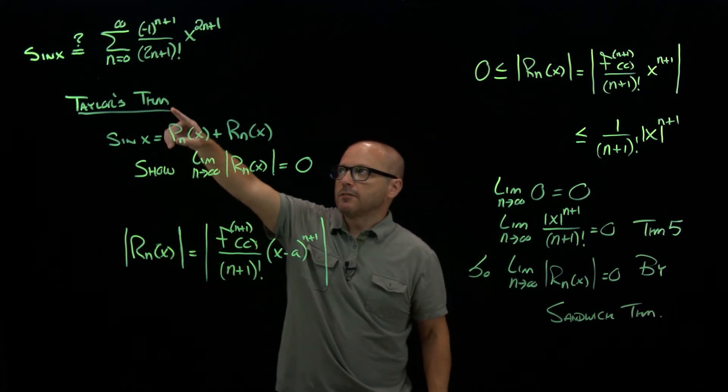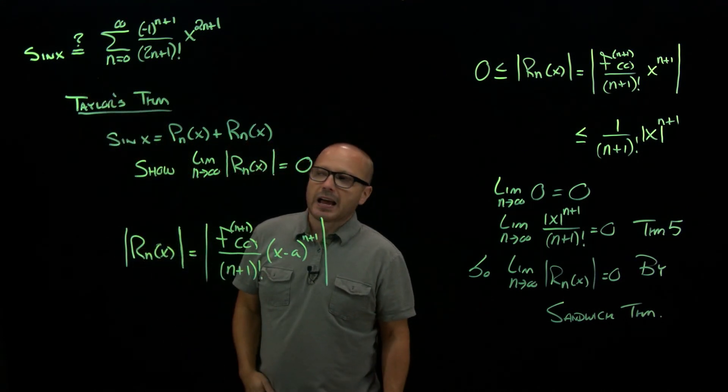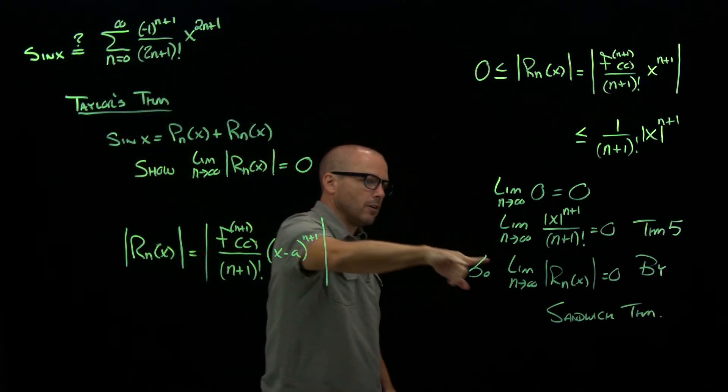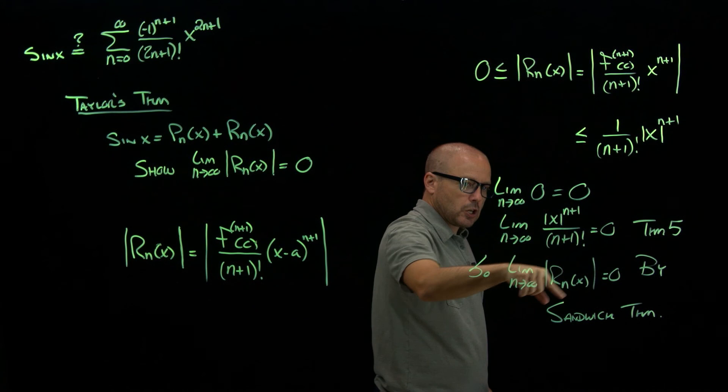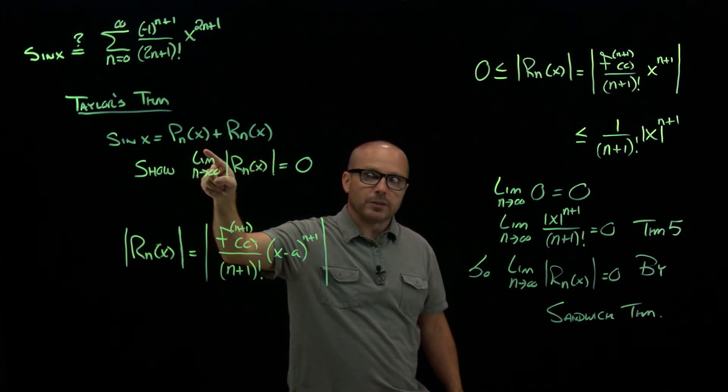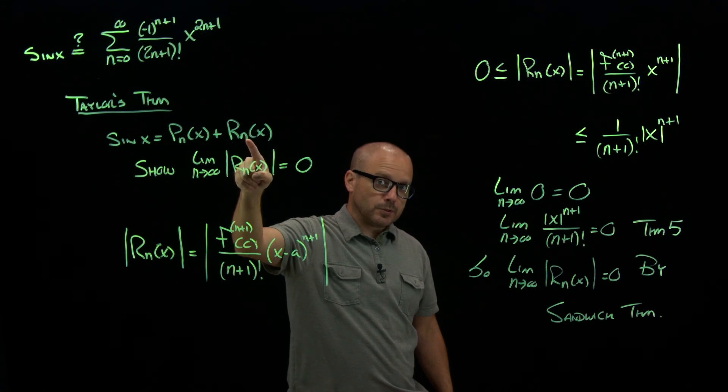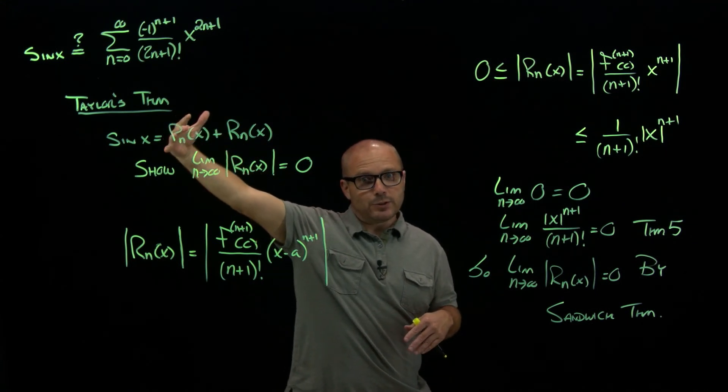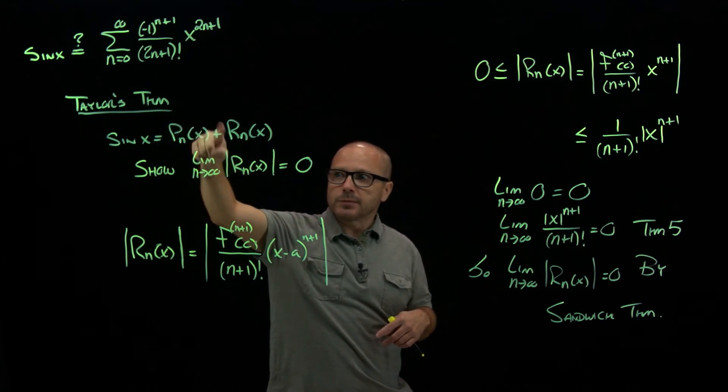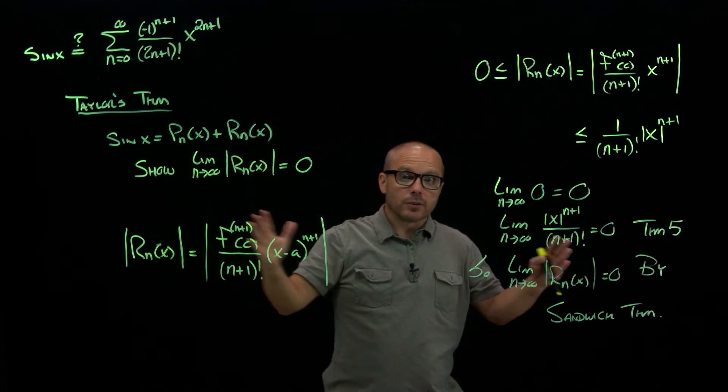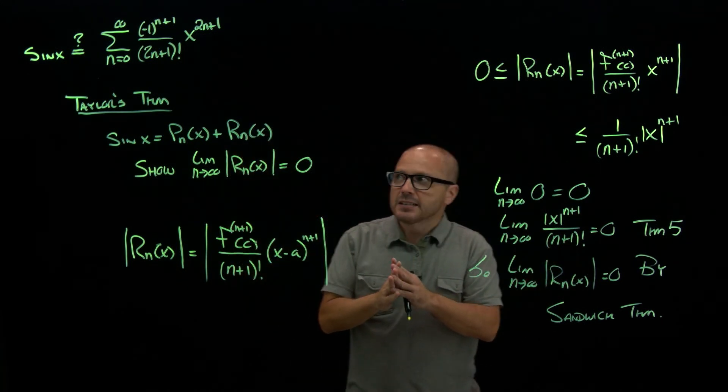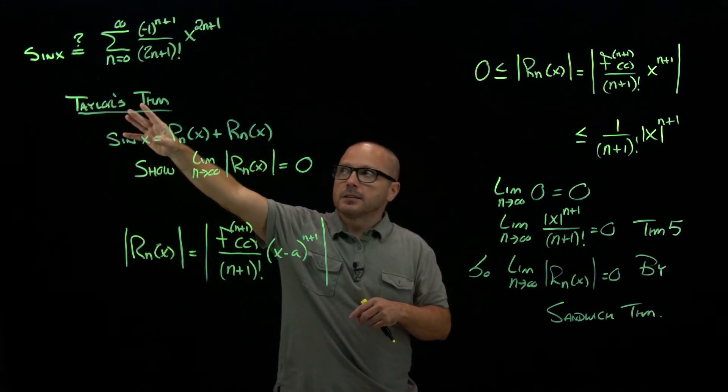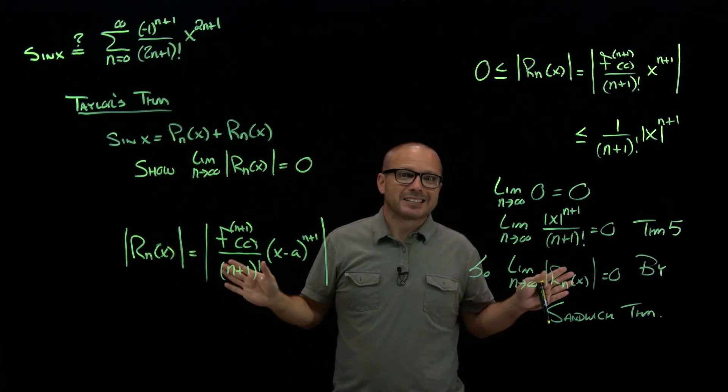So that means that we can finally get rid of that question mark. Sine of x does equal the series. The error goes to 0. We just showed that as you use higher and higher Taylor polynomials, this term gets closer and closer to 0. So when you reach infinity, when you use infinitely many terms, you don't reach infinity, but as you approach infinitely many terms, you approach no error. So they're converging on one another. So that means that anywhere, mathematically, you're dealing with the sine function, it is legitimate to replace it with its Taylor series because they are identical.